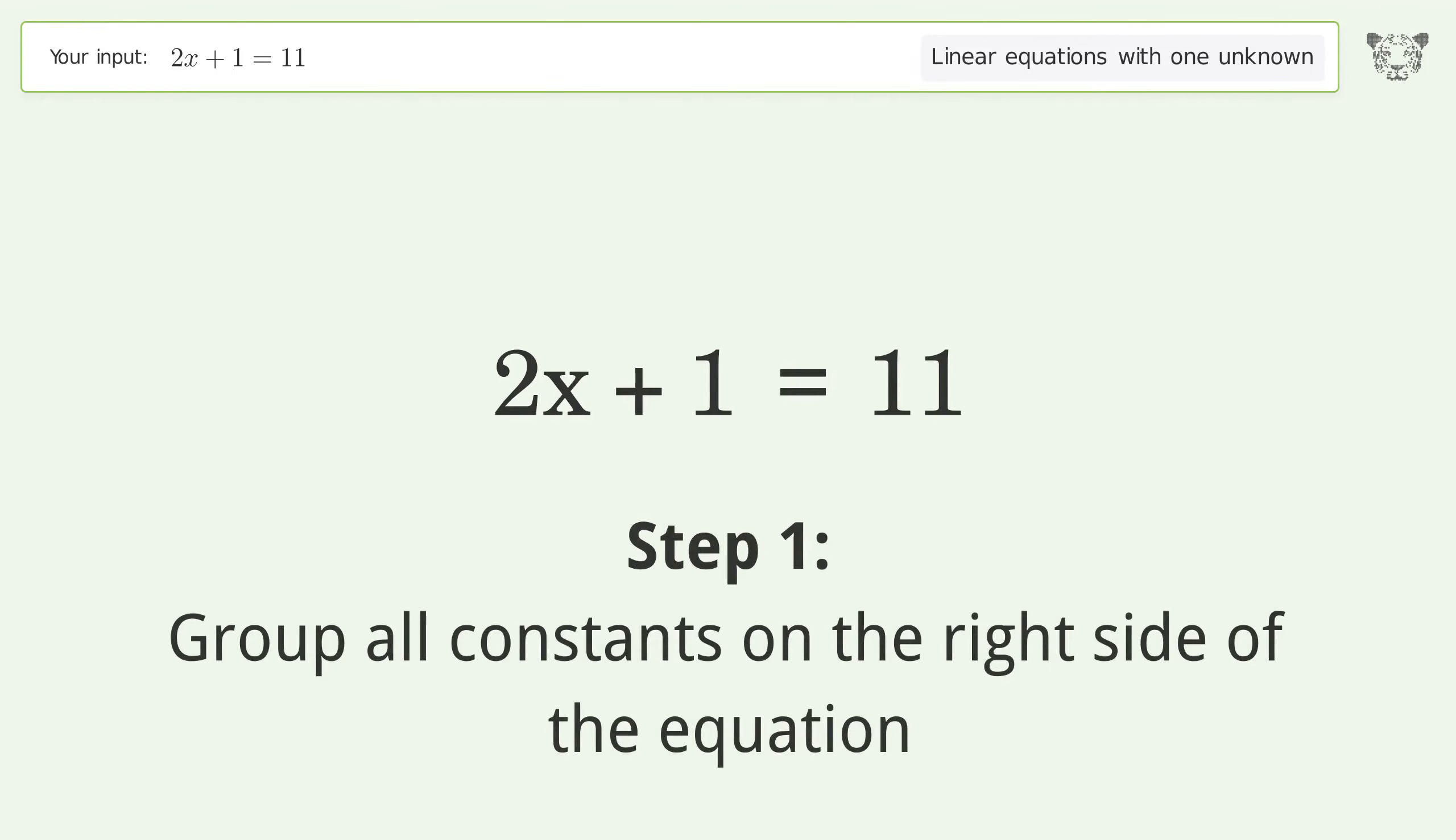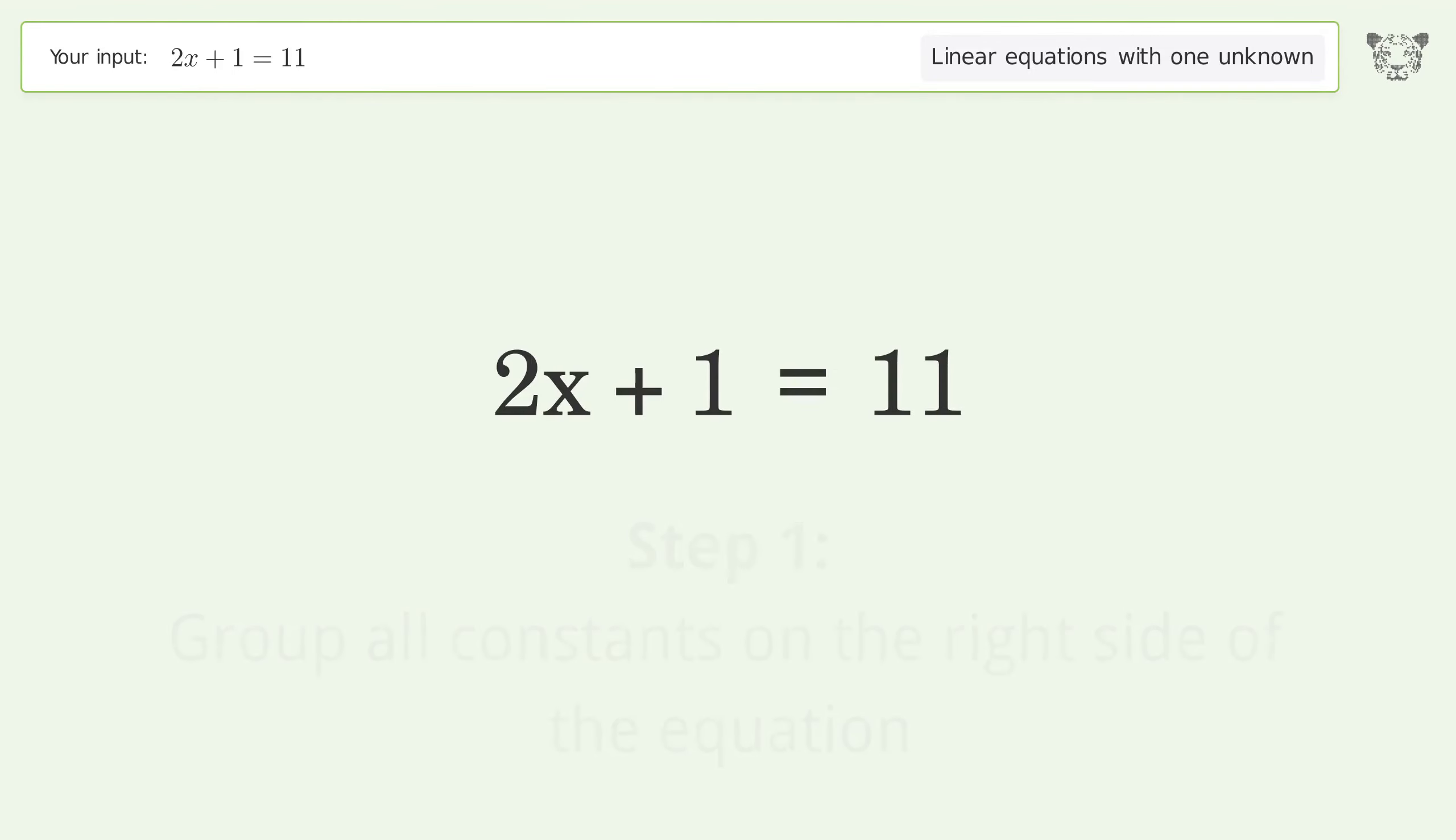Group all constants on the right side of the equation. Subtract 1 from both sides. Simplify the arithmetic.